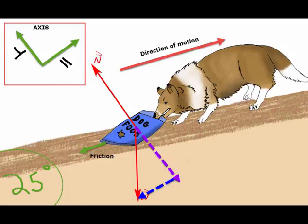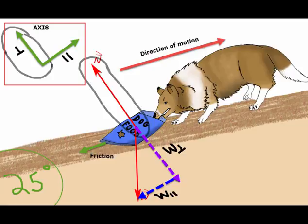Now, because we're at an angle, we're going to break up the weight into a parallel component and a perpendicular component. Why do we have to do this? As you can see,